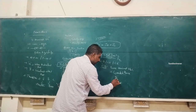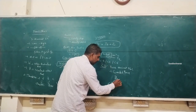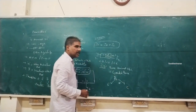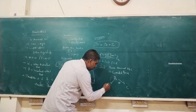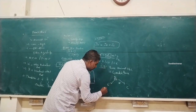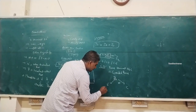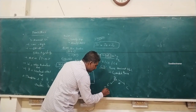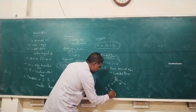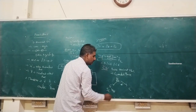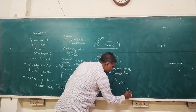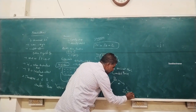With the base terminal common, the circuit is separated into emitter and collector sides. The input has emitter current IE and base-emitter voltage VBE. The output has collector current IC and collector-base voltage VCB.